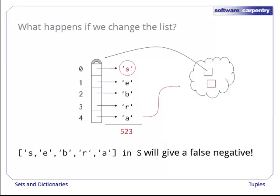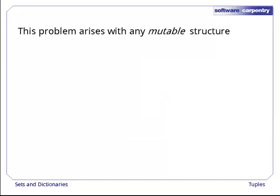It's as if we changed our name from Tom Riddle to Lord Voldemort, but left all the personnel records filed under R. This problem arises with any mutable data structure — i.e., anything whose contents or value can be changed after its creation. Integers and strings are safe, since their values are fixed, but the whole point of lists is that we can grow them, shrink them, and overwrite their contents.